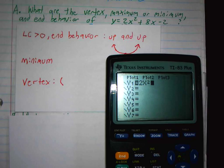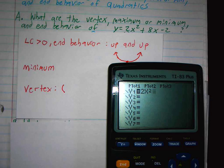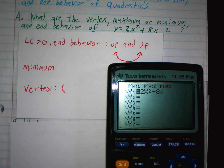2x squared plus 8x. Remember x is here. Minus 2, minus 2.